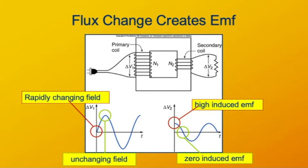So the current produced in the secondary will also be an alternating current, but it will be out of phase with the current in the primary.